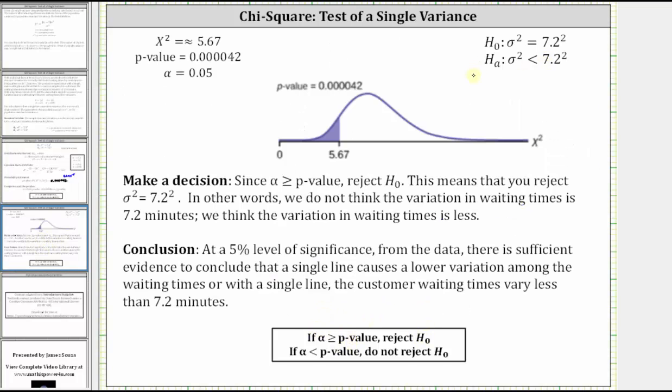So if we reject the null hypothesis, we do not think that the variation in waiting times is 7.2 minutes. We think the variation in waiting time is less. So our final conclusion, because alpha is equal to 0.05, at a 5% level of significance from the data, there is sufficient evidence to conclude that a single line causes a lower variation among the waiting times, or with a single line, the customer waiting times vary less than 7.2 minutes. I hope you found this helpful.